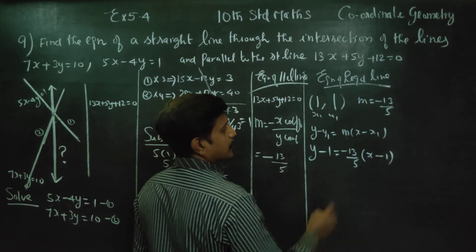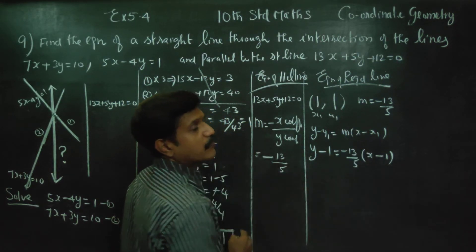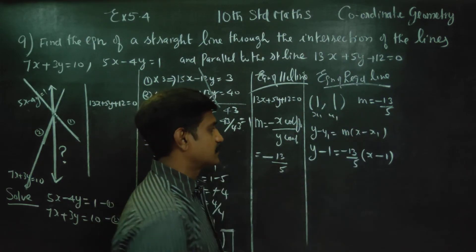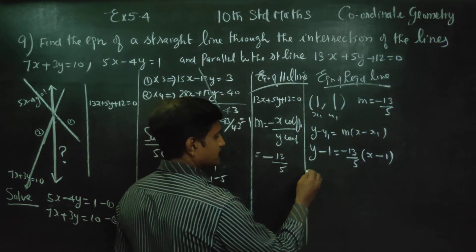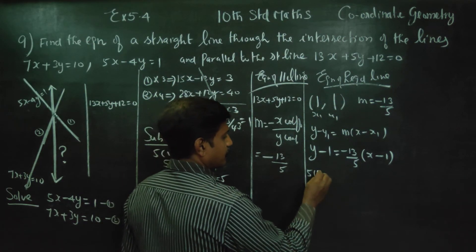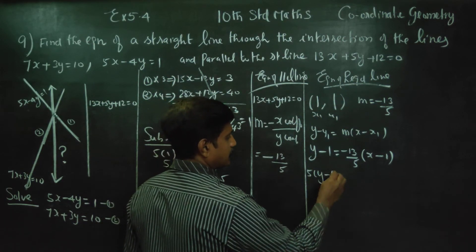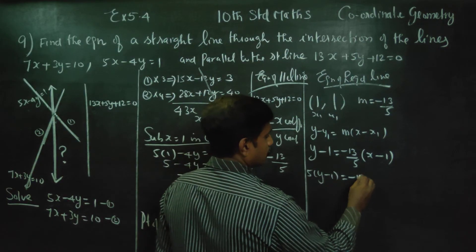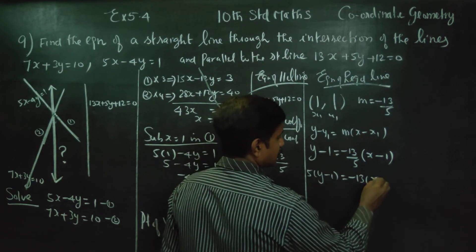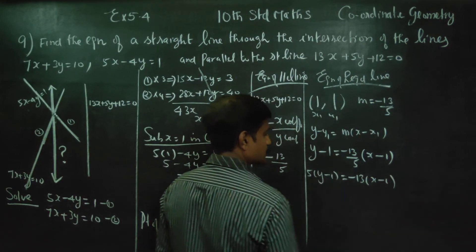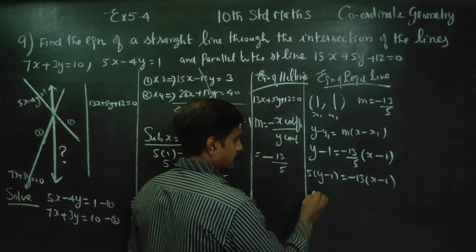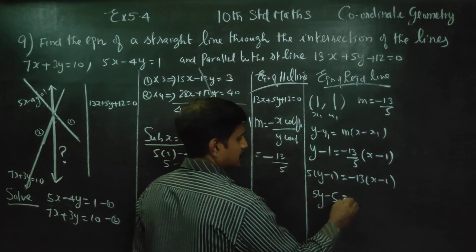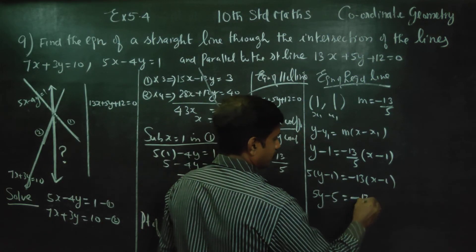Substitute the point (x1, y1) and apply the slope formula. Cross multiply: 5(y minus 1) is equal to minus 13(x minus 1), giving 5y minus 5 is equal to minus 13x plus 13.